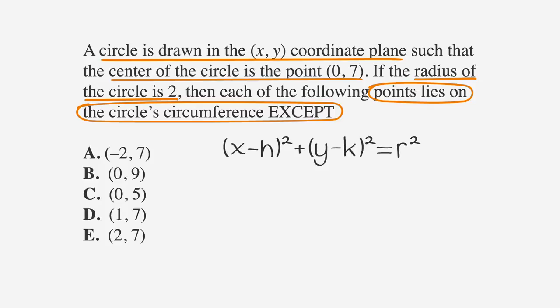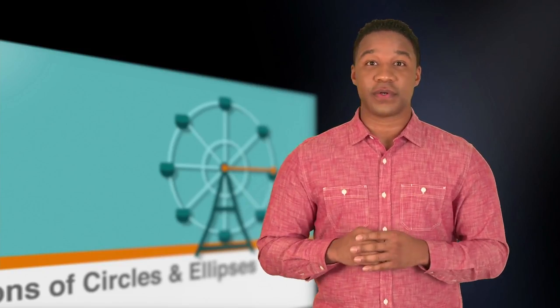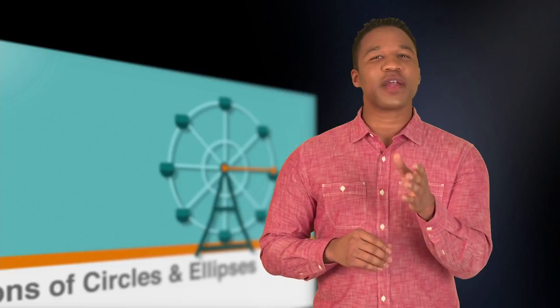Since the center of the circle is 0,7, h is 0 and k is 7, and since our radius is 2, r is 2. Plug in our values and we get x squared plus y minus 7 squared is equal to 4. All the points on the circumference of the circle have to fit into the equation of our circle. Let's back solve to figure out if the points fit.